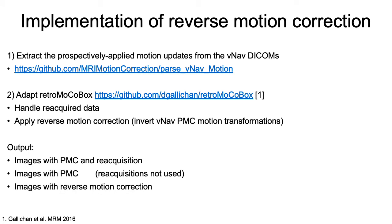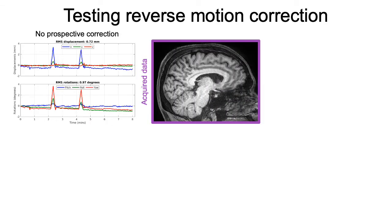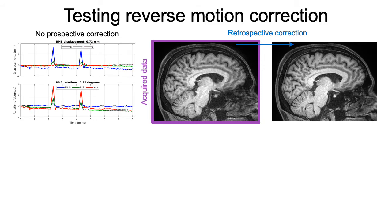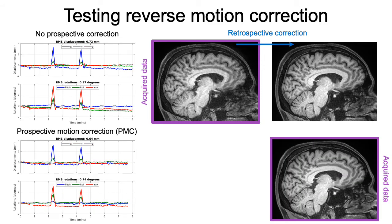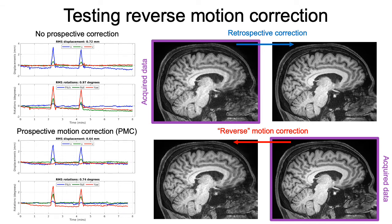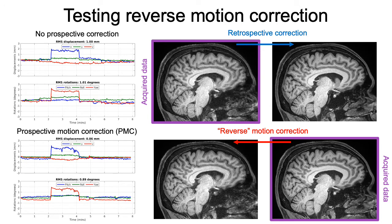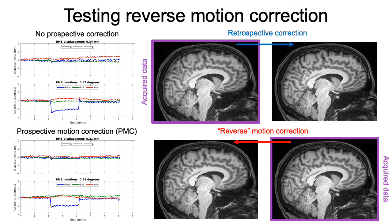The output was images with PMC and reacquisition, images with just PMC (i.e., with reacquisitions removed), and images with reverse motion correction. In most comparisons we focus on the acquired image and the reverse motion corrected image. Here are some examples with different types of movement. In the first example there were two periods of continuous head movement; the prospectively corrected image and the reverse motion corrected image show similar artifacts to the actual uncorrected image. Further examples confirm that artifacts in the reverse motion corrected image are very similar to those in the uncorrected image.